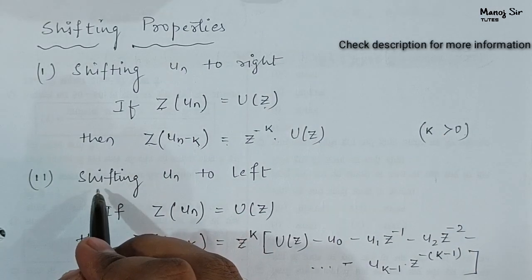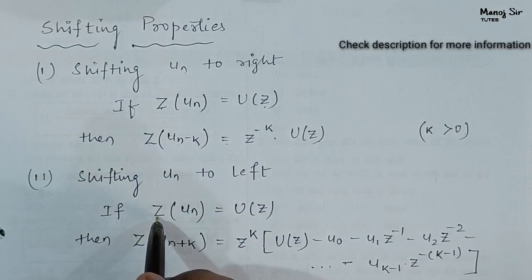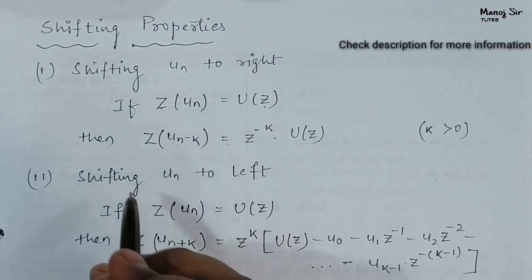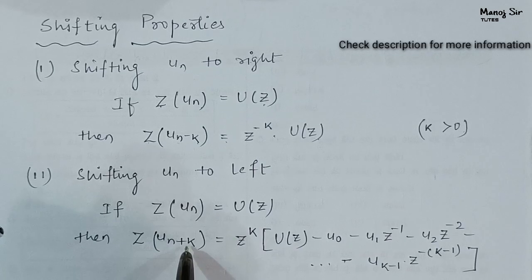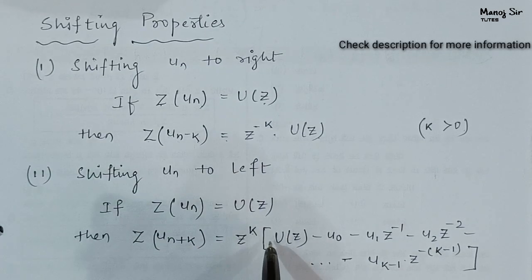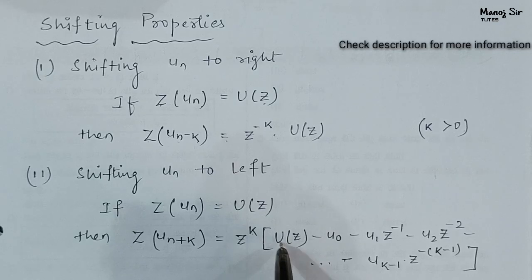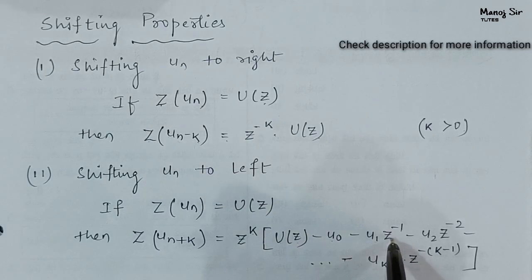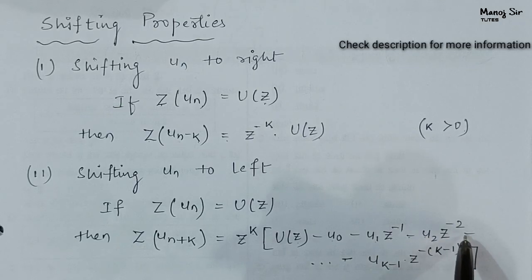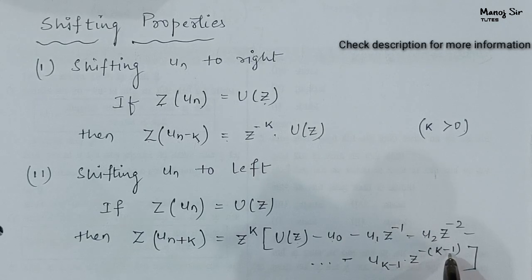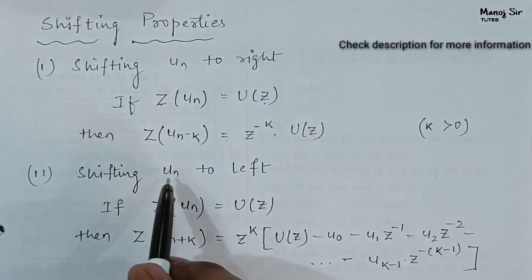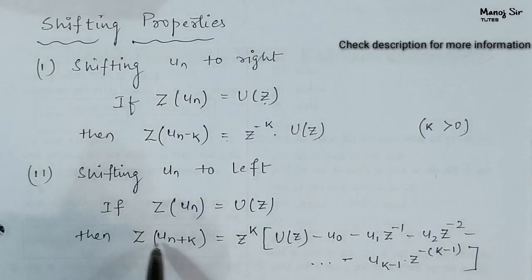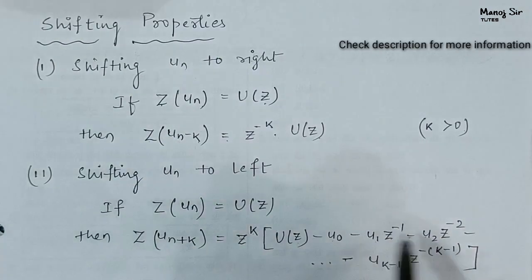Coming to the second part, that is shifting u(n) to the left. If Z transform of u(n) is equal to U(z) and we are shifting u(n) to the left, then Z transform of u(n plus k) is equal to z to the power k, multiplied by: U(z) minus u₀ minus u₁·z⁻¹ minus u₂·z⁻² minus ... minus u_(k-1)·z^(-(k-1)).